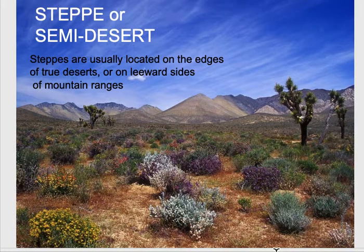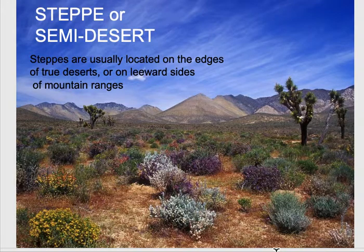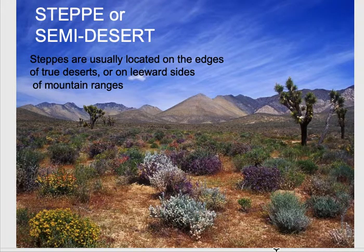We also have some dry climates that are not quite as dry as a true desert. They're called steppes or semi-deserts, and they can be near the edges of a desert or on the leeward side of mountain ranges. For example, a lot of the desert southwest in the United States, like Arizona, is on the leeward side of the Rockies and the Sierra mountain ranges, and tends to be drier.